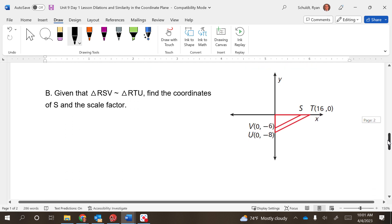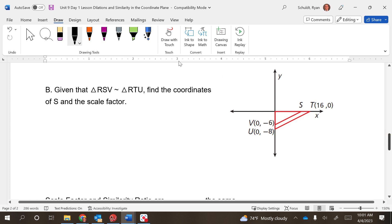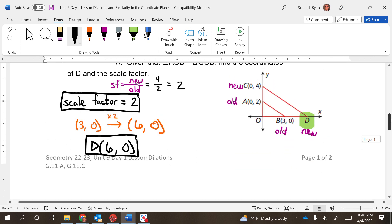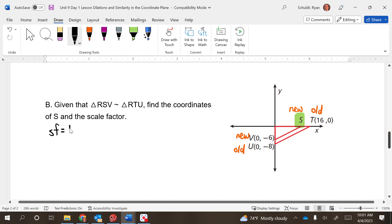Given that RSV is similar to RTU, find the coordinates of S and the scale factor. We want to find S, so that means S is the new, T is the old. That means V is the new, U is the old. So for our scale factor, what did we say scale factor was? New over old. New over old, so look at the two points you have—these are the ones we want to use. So negative 6 over negative 8, that reduces to 3 over 4. So our scale factor is 3/4.